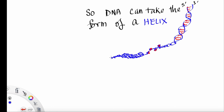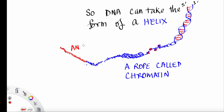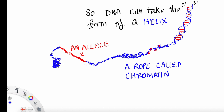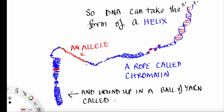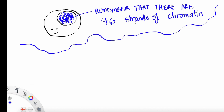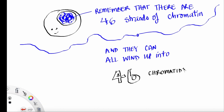The alleles are still on the chromatin. So DNA can take the form of a helix wrapped around histones in a rope called chromatin, with alleles on chromatin coding for a particular trait. We can wrap up the chromatin into a big ball of yarn called a chromatid. There are 46 strands of chromatin, and they can wind up into 46 balls of yarn called chromatids, and there are alleles on these chromatids.